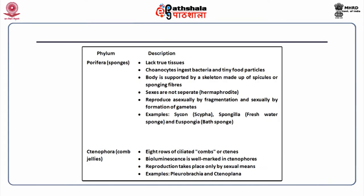Porifera, otherwise known as sponges, lack true tissues. They have cells called choanocytes which ingest bacteria and tiny food particles. The body is supported by a skeleton made up of spicules or spongin fibers. The sexes are not separate; they reproduce asexually by fragmentation and sexually by formation of gametes. Examples include sycon, spongilla and euspongia.